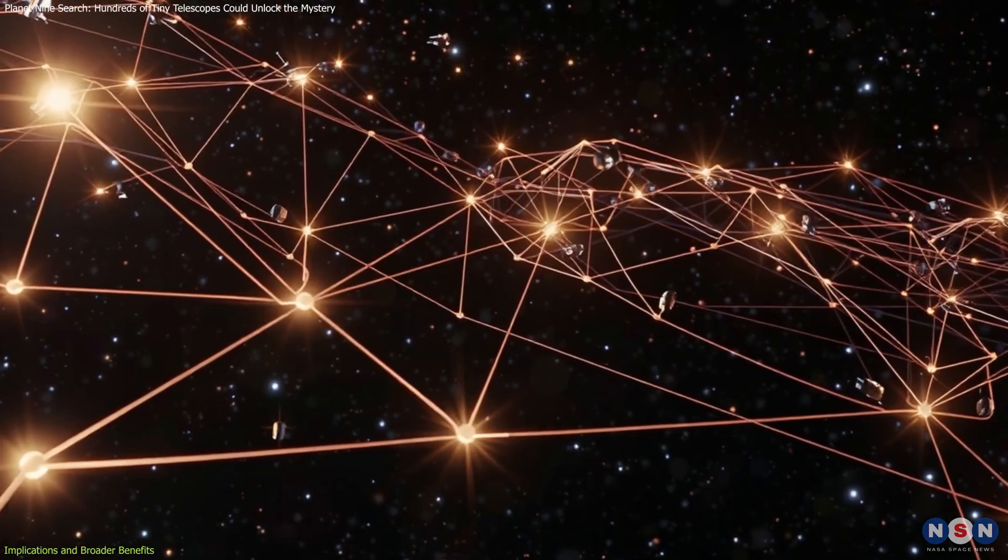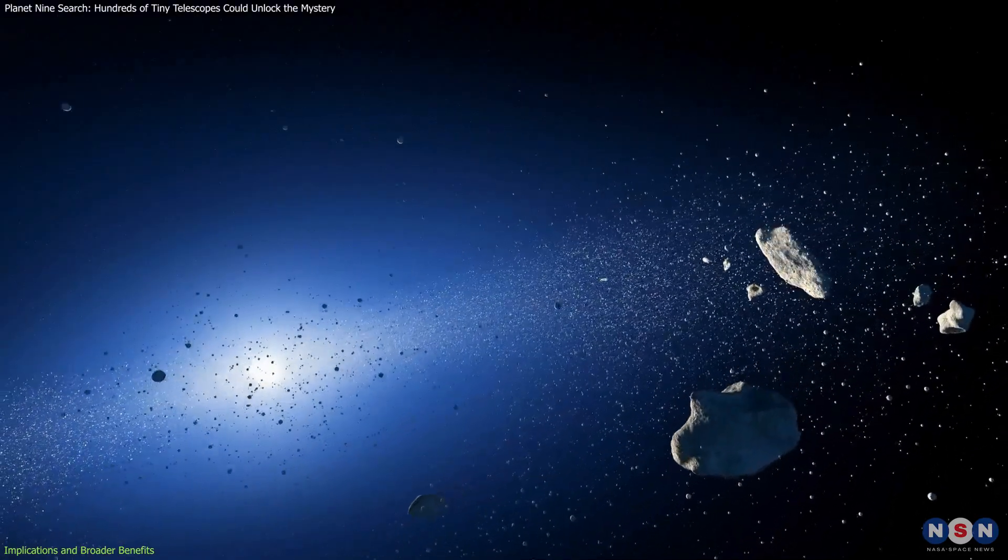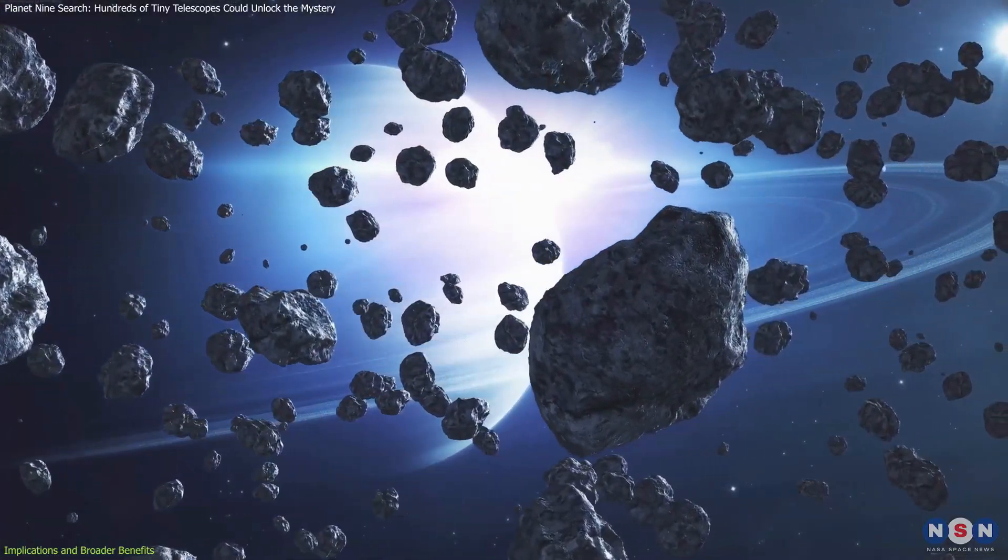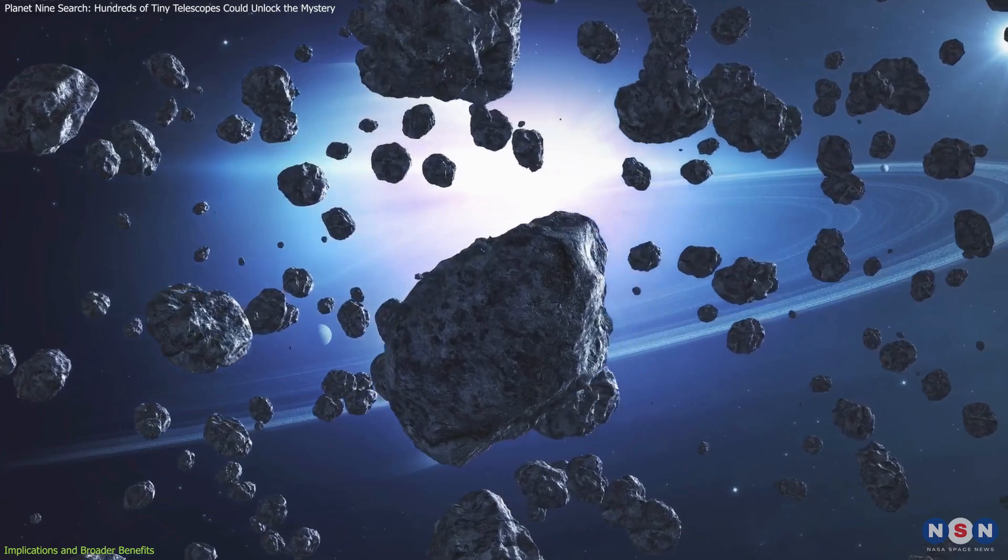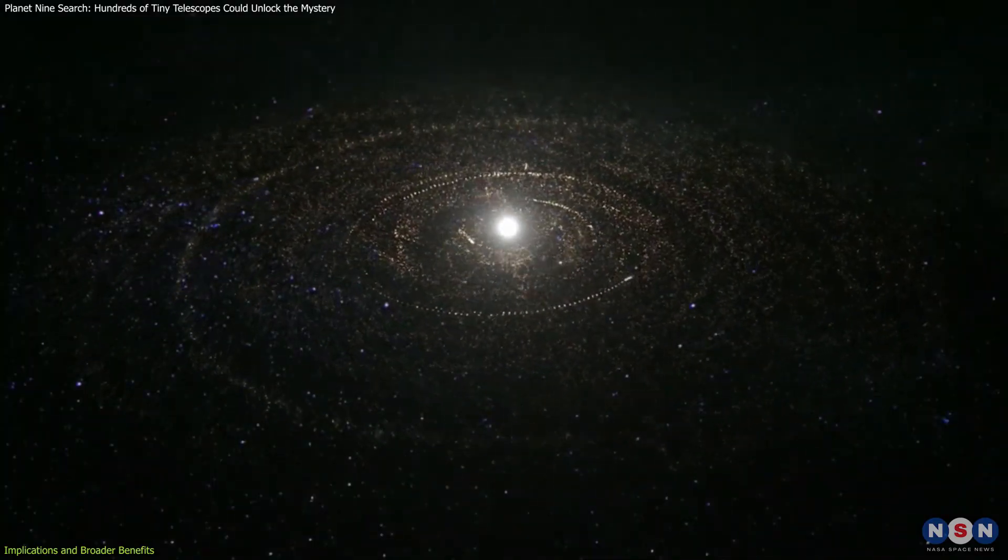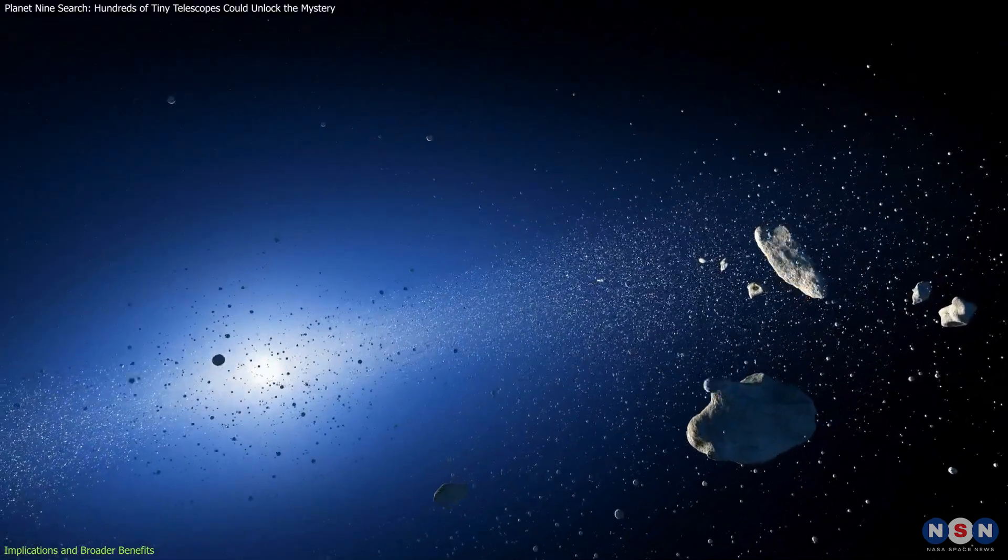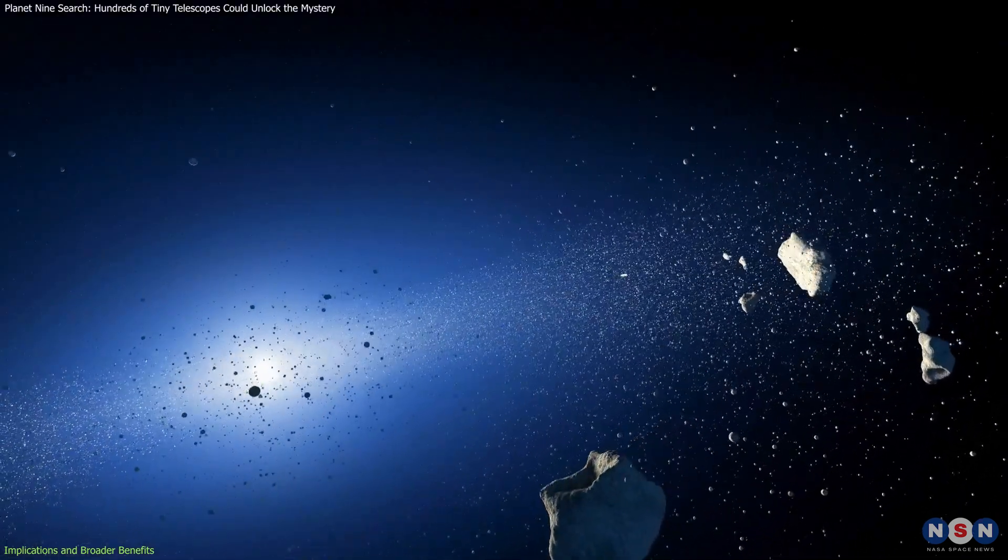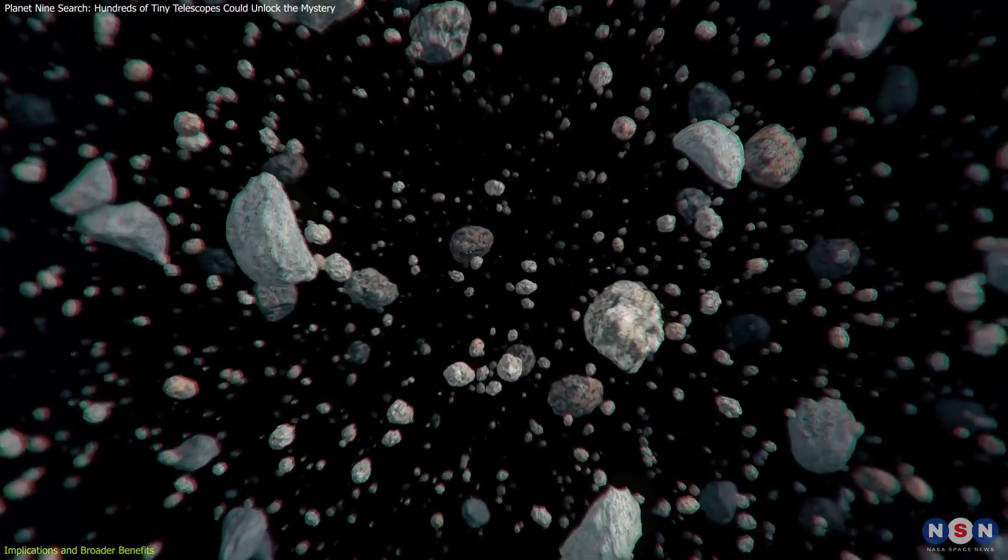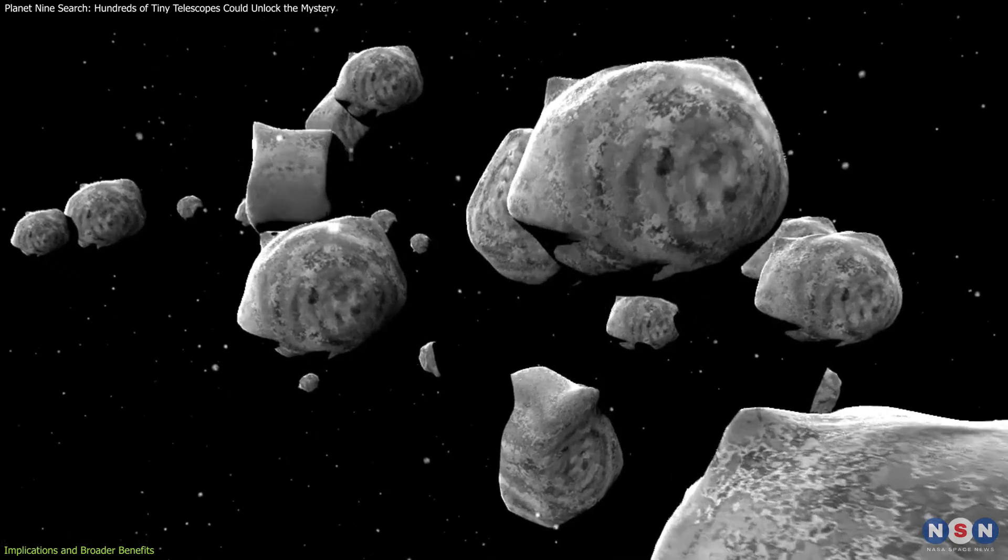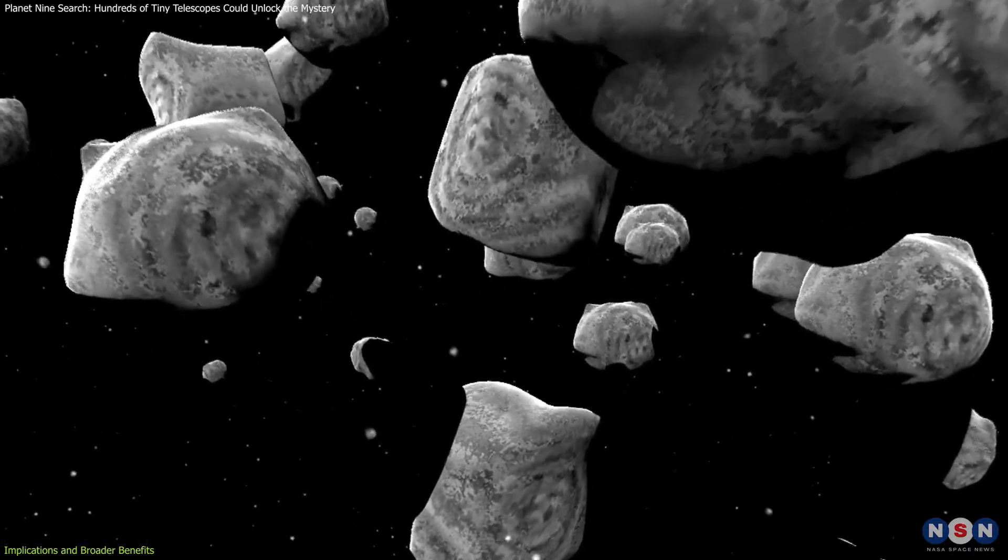The Occultation Array also holds promise for advancing our understanding of the Kuiper Belt. This region, located beyond Neptune, is a reservoir of icy bodies and dwarf planets that preserve clues about the solar system's early days. By providing high-resolution data on Kuiper Belt objects, the project could reveal their sizes, shapes, and surface compositions, offering valuable insights into the building blocks of planets.